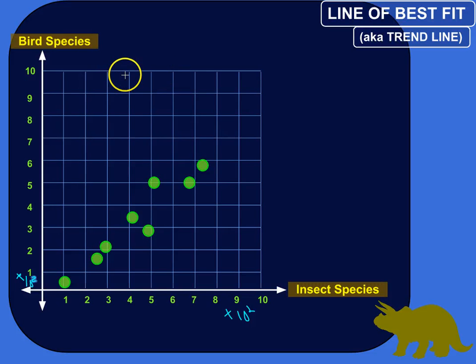All right, suppose I'm a biologist and I'm interested in the question of is there a correlation between the number of different bird species that an island can support and the number of different insect species?